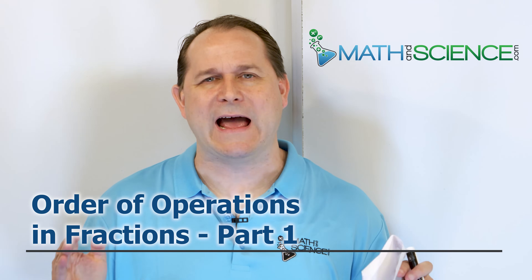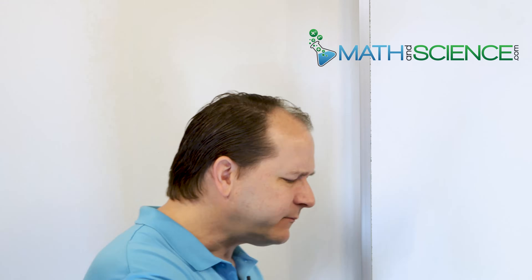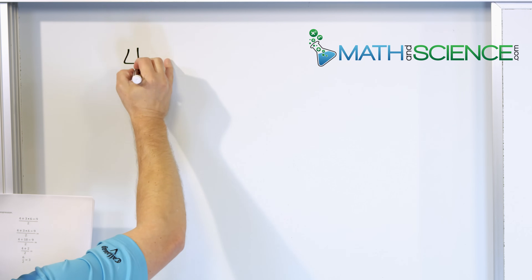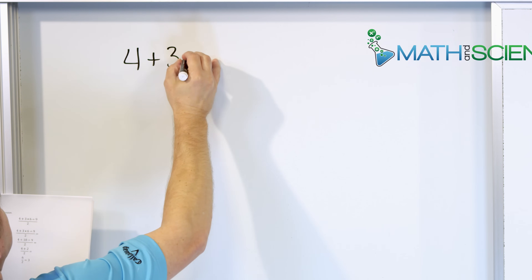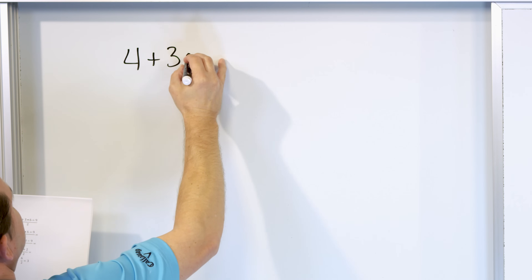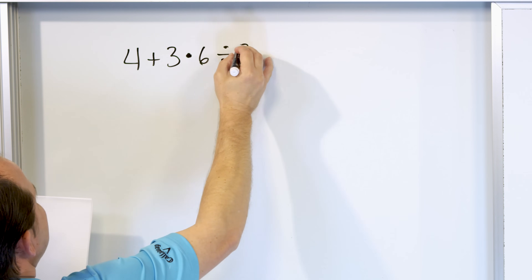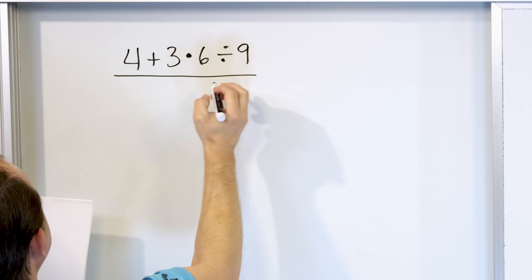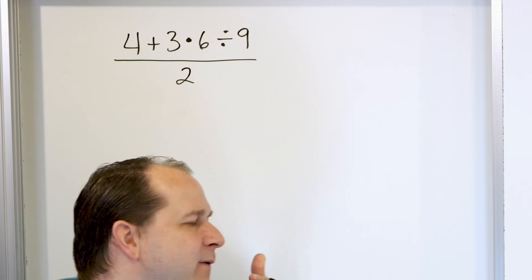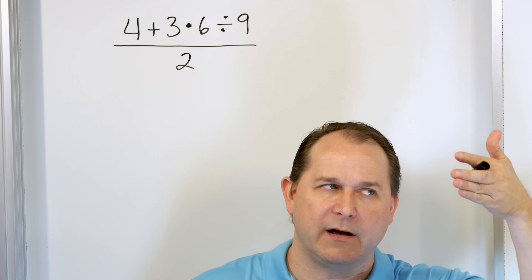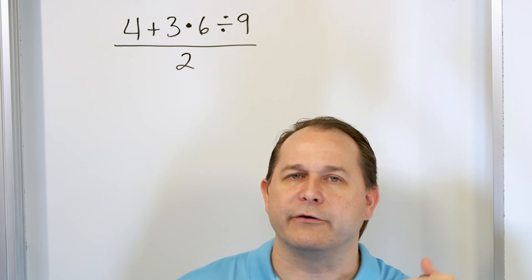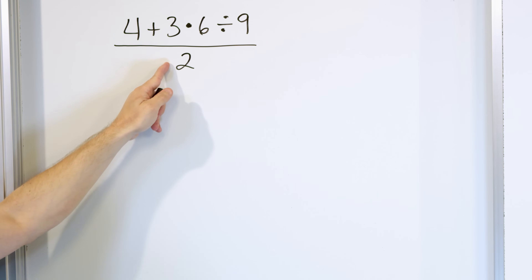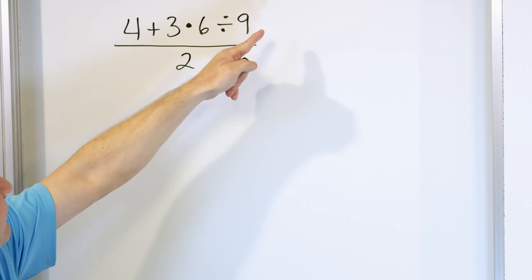So here what we're going to have is very large expressions with a very large fraction bar. It's going to be easier for me to explain it just by writing a problem down. Let's say you have four plus three times six, and then you have divided by nine. But all of this stuff is in the numerator of a really large fraction with the number two on the bottom. So you remember a fraction has a numerator — a top number — and a denominator, the bottom number. The denominator of this fraction is just a two, but the numerator is all of this junk here.